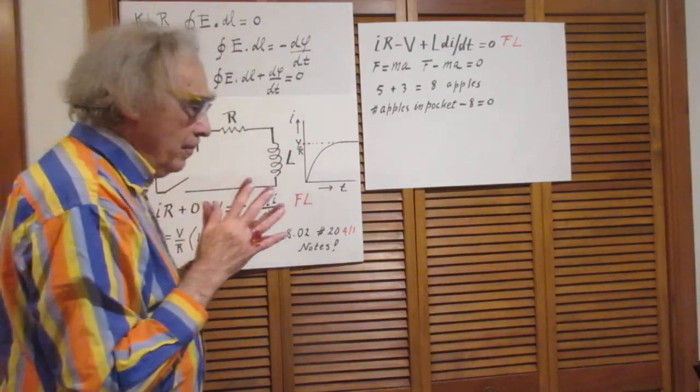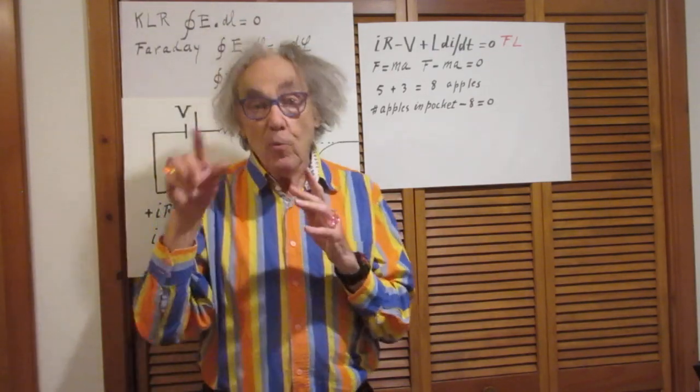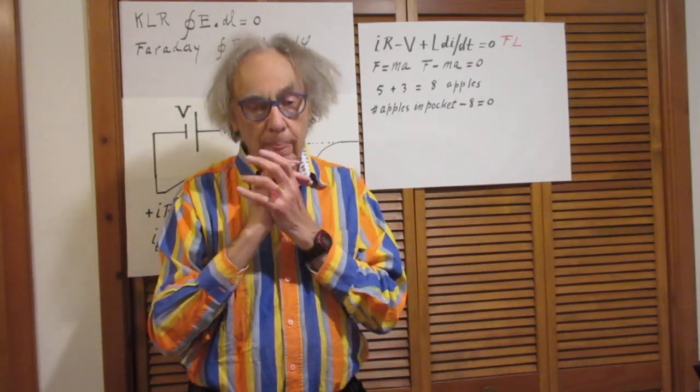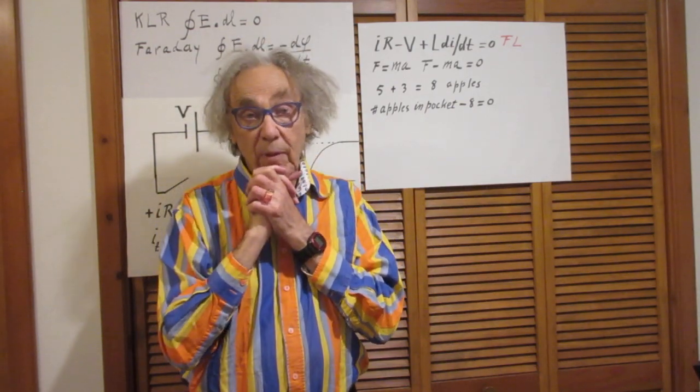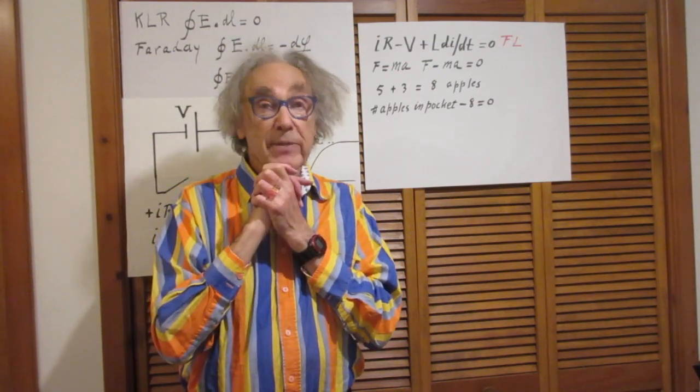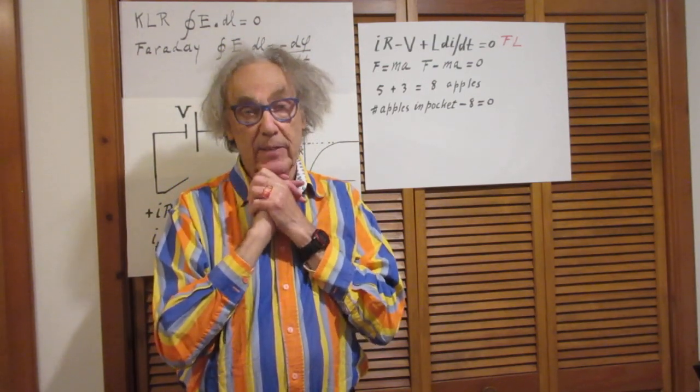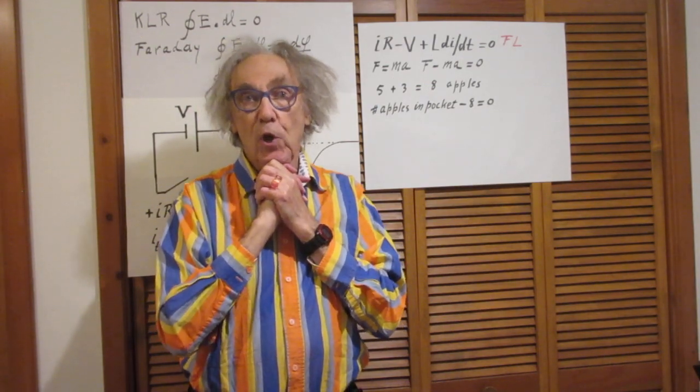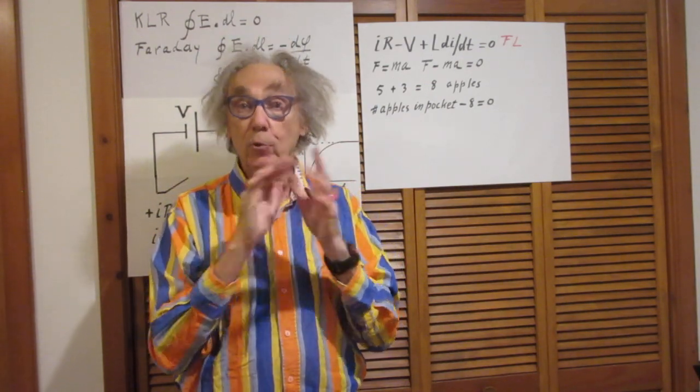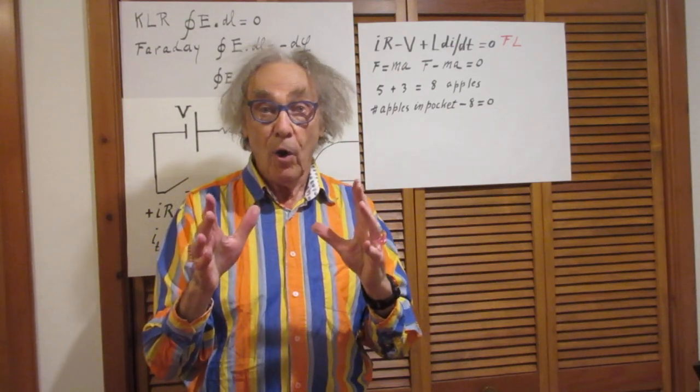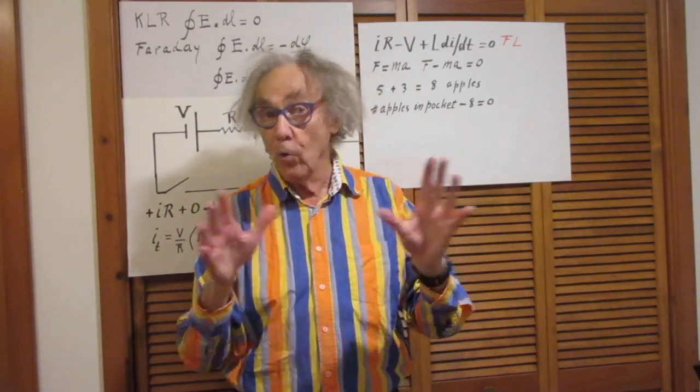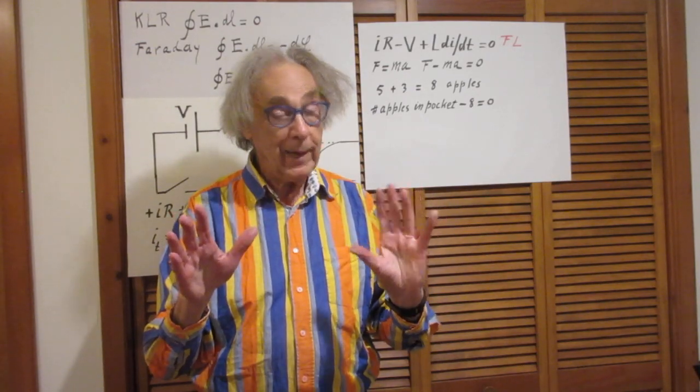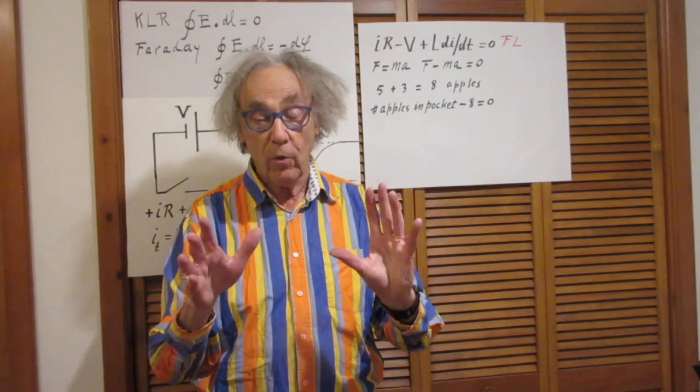Faraday's law says if you go around the circuit, E dot DL, then what you measure is minus dphi dt. And phi is a magnetic flux and you have to do your own homework again on what magnetic flux is. It's all in my lectures in 802, lecture 20 I'm sure I cover Faraday's law.